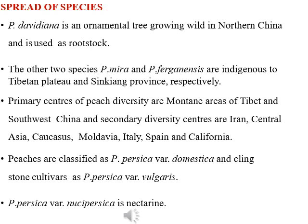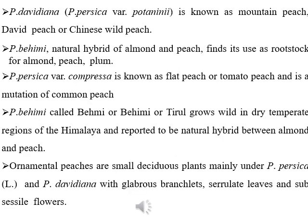Let's talk about the classification of Peach. Peach has two classes: one is Prunus persica variety domestica, and the second is clingstone cultivar as Prunus persica variety vulgaris. Prunus persica variety nectarina is a nectarine. Prunus davidiana is a wild peach and is a natural hybrid of almond and peach, used as rootstock for almond, peach, and plum. Prunus persica variety compressa is known as flat peach or tomato peach and is a mutation of common peach.